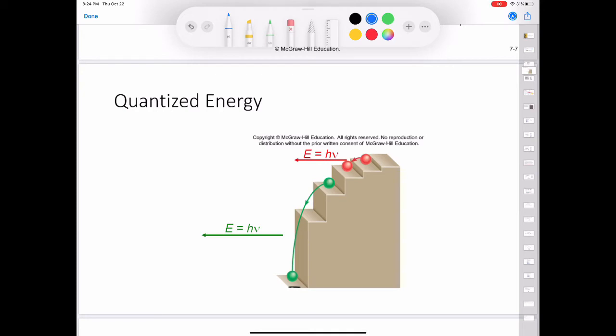The quantized movement of the electron from one energy state to another is analogous to the movement of a tennis ball either up or down a set of stairs. The ball can be on any one of several steps, but never between the steps. A journey from a low step to a high step is an energy-requiring process, whereas movement from a higher step to a lower step is an energy-releasing process. The quantity of energy involved in either type of change is determined by the distance between the beginning and ending steps.